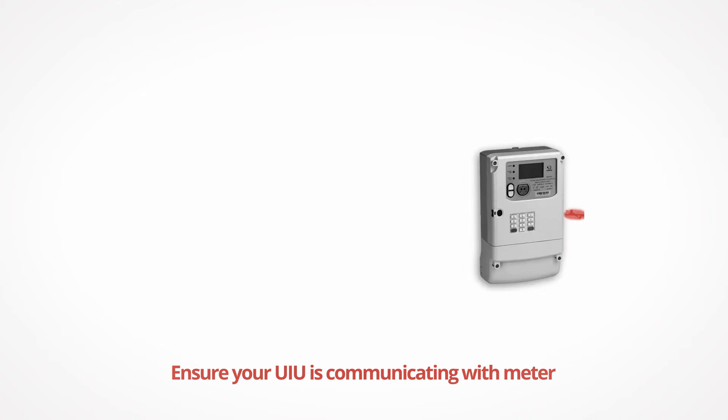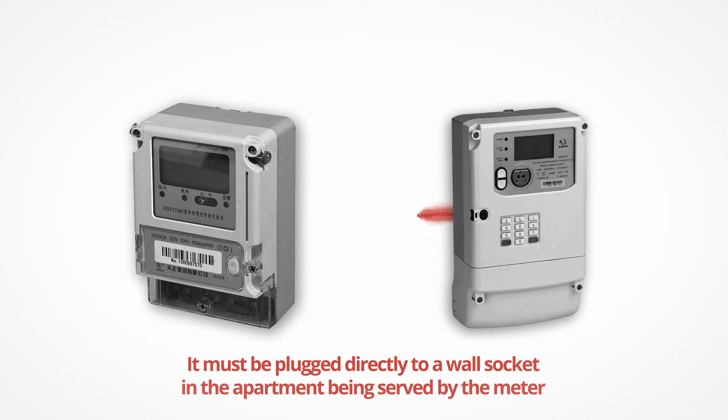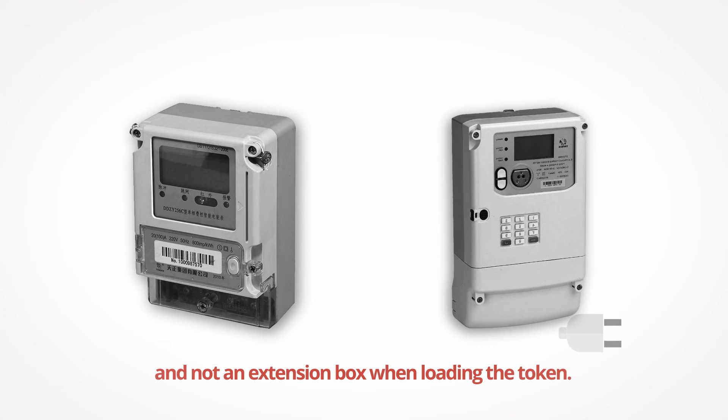Step 4: Ensure your UIU is communicating with the meter. Check that the UIU box is properly connected. It must be plugged directly to a wall socket in the apartment being served by the meter and not an extension box when loading the token.